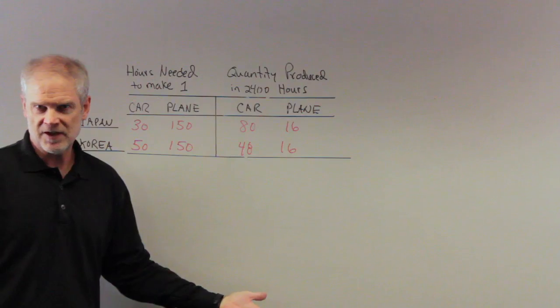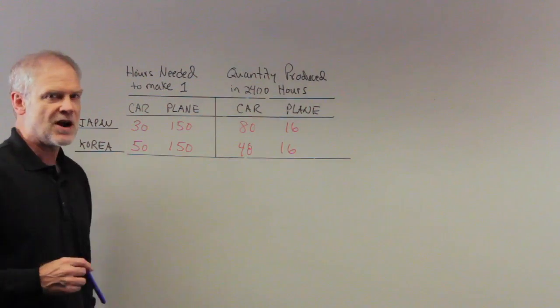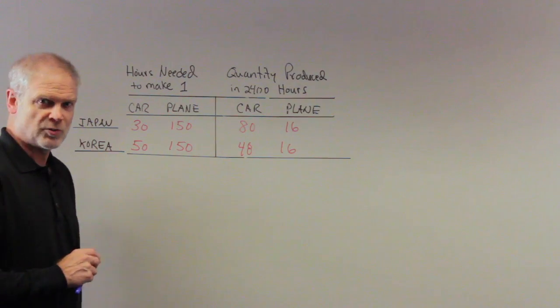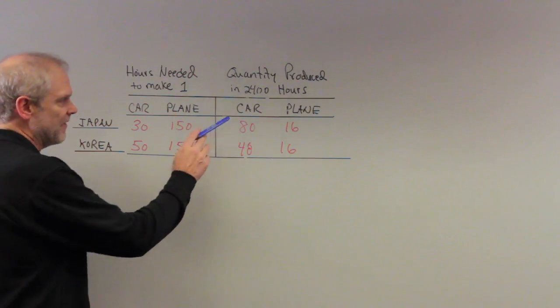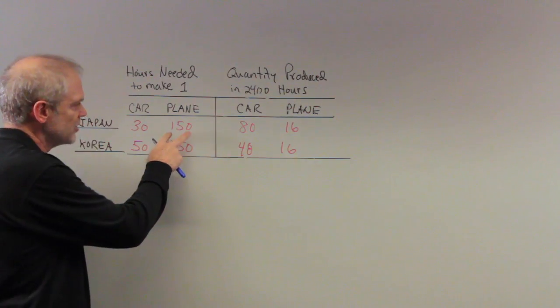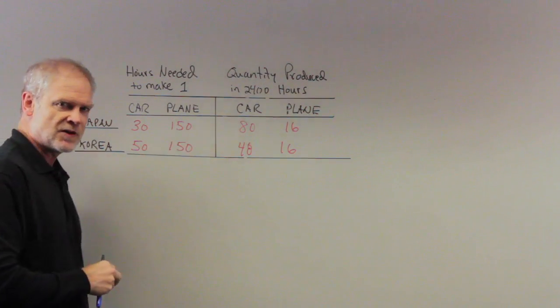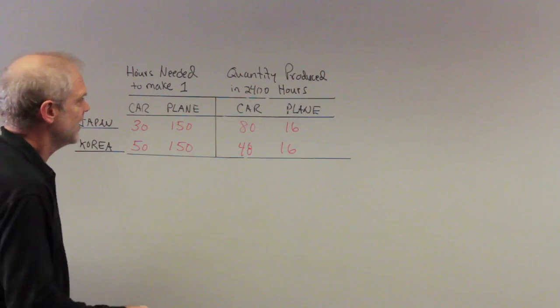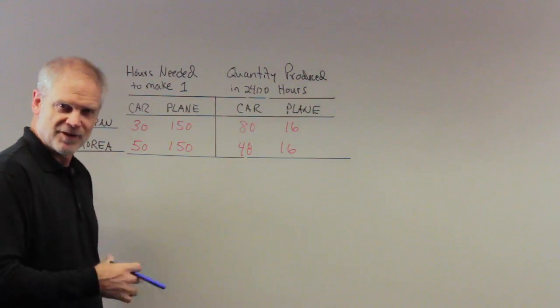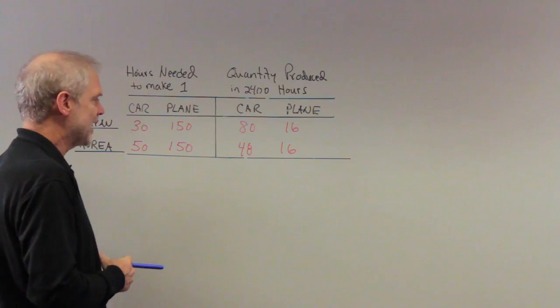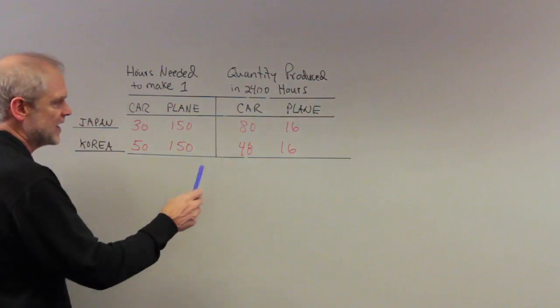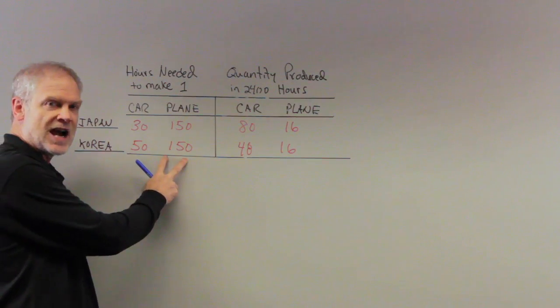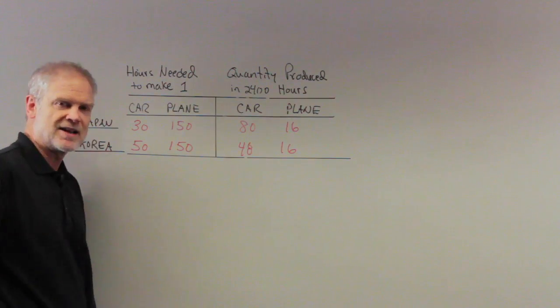Do the exact same thing for planes. It takes 150 hours to make a plane in Japan. It takes 150 hours to make a plane in Korea as well. So if we take all 2,400 hours and we devote it to making planes at 150 hours per plane, we see that Japan can produce 16 planes. Korea has the same kind of productivity in plane production as Japan. If they devote all 2,400 hours to the production of planes at 150 hours per plane, they also can get 16 planes.